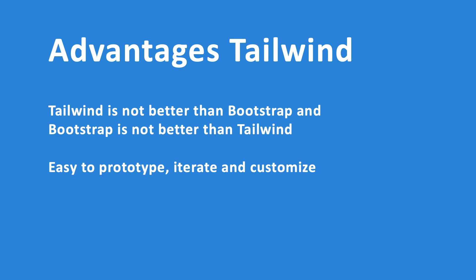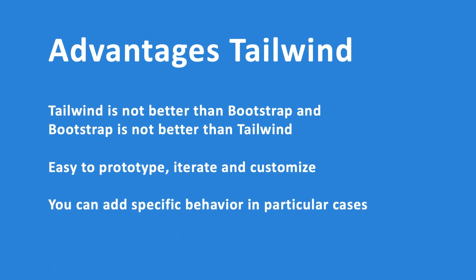You can easily change something like your font size without harming the rest of your application. Choosing Tailwind over Vanilla CSS makes the process so much faster since you don't need to write down every single styling — especially for backend developers. To keep it polite, creating your own CSS is a pain. Therefore, using built-in classes will make your development phase a lot easier. Another advantage is that you can add specific behavior in particular cases.